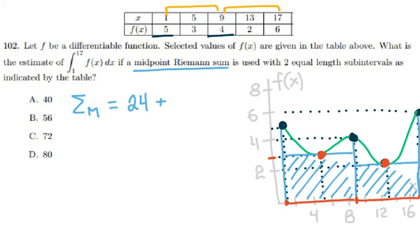So 8 times 2 will give me 16. So the total area or the midpoint Riemann sum would be equal to 40.